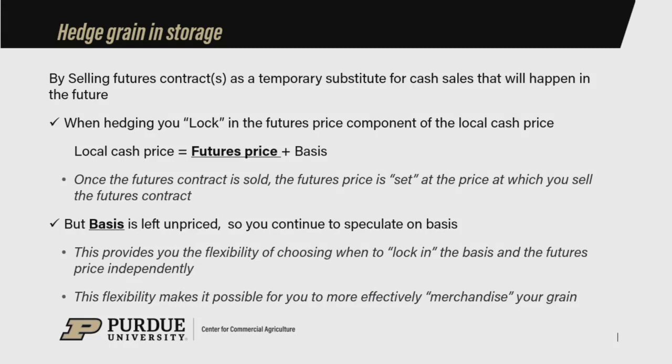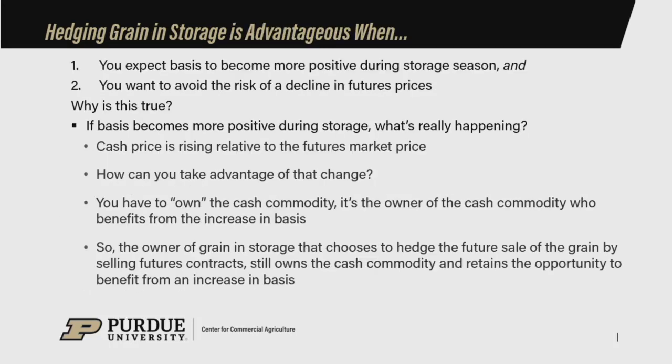That's the opportunity here. By separating cash price into its two components, you've increased your flexibility and the possibility of generating a positive return to storage. Hedging grain in storage is advantageous when you expect basis to be more positive throughout the storage season. We've talked about basis patterns in previous videos. When we talk about storage hedging, we like to look at those deferred basis charts, where we typically see a very steady increase throughout the marketing year. If we expect basis to follow that pattern, we would expect some positive storage returns.